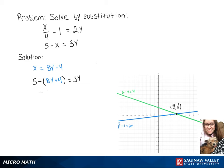Now we can distribute the negative and add like terms, giving us negative 8y plus 1 equals 3y.